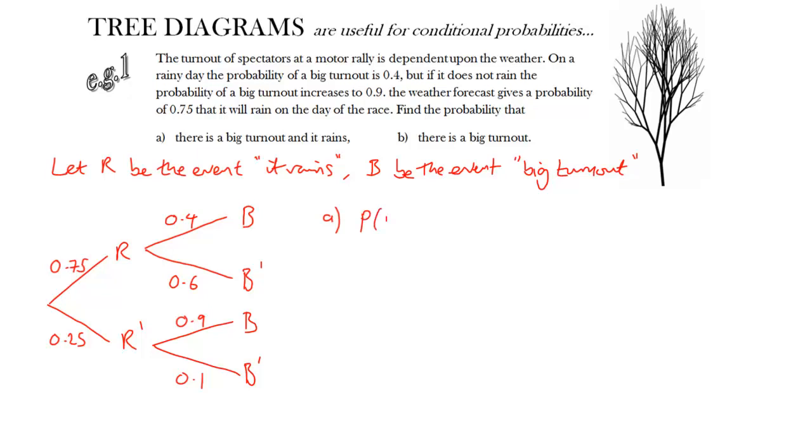So let's use this tree diagram. The probability that there is a big turnout and it rains, the notation for that is the intersection, and we just look at the branches that correspond to this. We have to go along the first branch for it raining, and then along the branch for it having a big turnout, and you always multiply along the branches. So simply multiply 0.75 and 0.4.